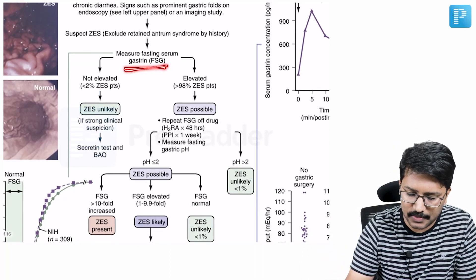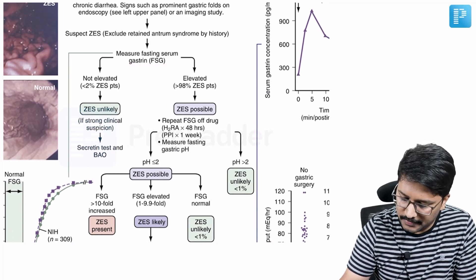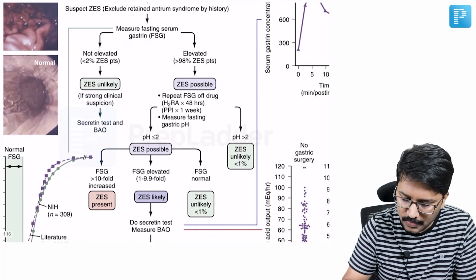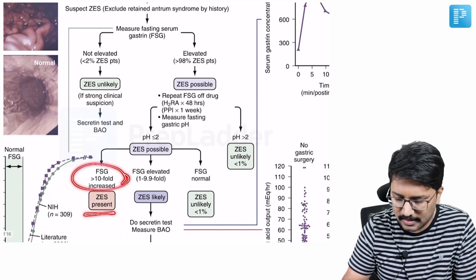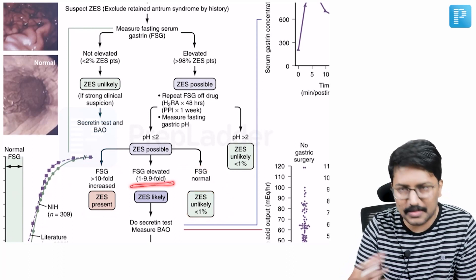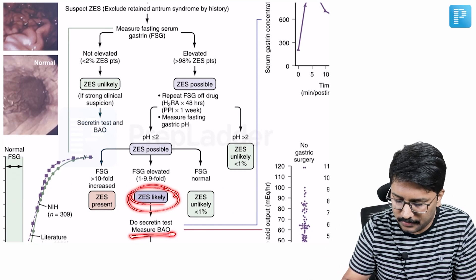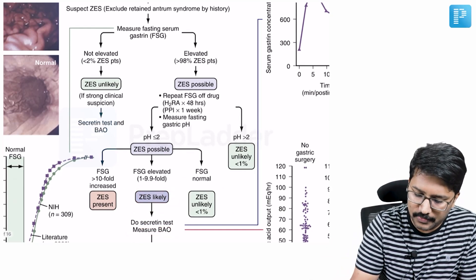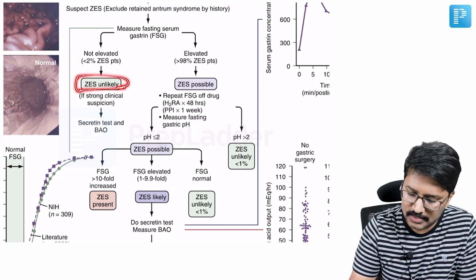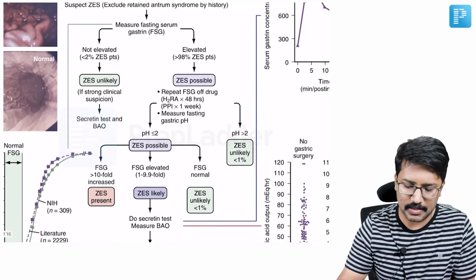Then you measure fasting serum gastrin levels. If elevated with pH less than 2, a tenfold elevation directly establishes the diagnosis. A normal gastrin level makes ZES unlikely. A 1 to 9.9-fold elevation — the 100 to 1000 range — is where suspicion remains and you proceed to the secretin stimulation test. When fasting gastrin level is not elevated, ZES is unlikely, but with strong clinical suspicion you still go with the secretin stimulation test.